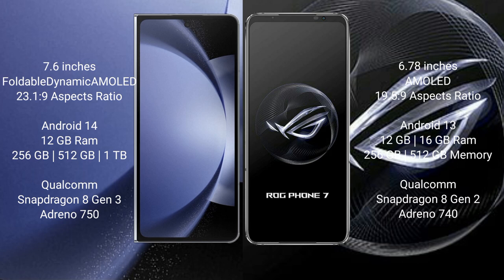The Samsung Galaxy Z Fold 6 runs on the Android 14 operating system. The ASUS ROG Phone 7 runs on the Android 13 operating system. The Samsung Galaxy Z Fold 6 comes with 12GB RAM and 256GB or 512GB internal storage.